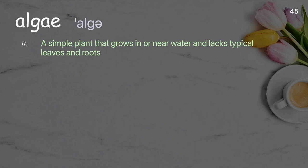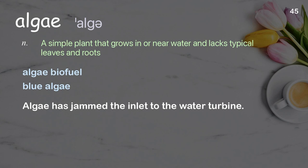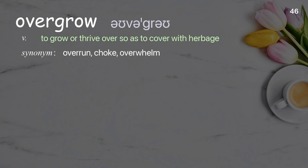Algae: a simple plant that grows in or near water and lacks typical leaves and roots. Examples: algae biofuel, blue algae. Algae has jammed the inlet to the water turbine.